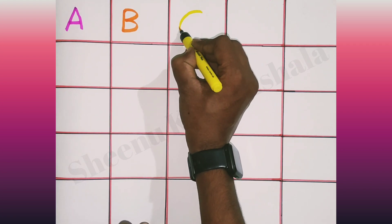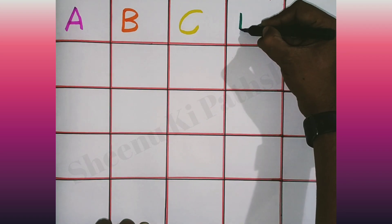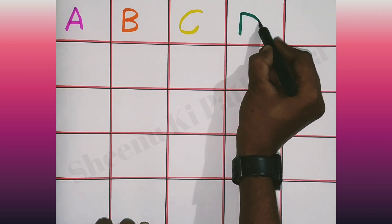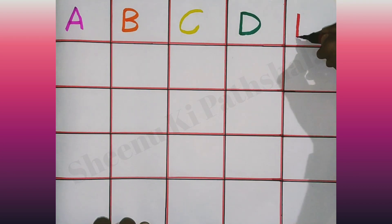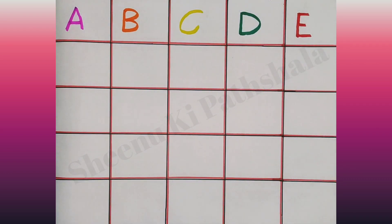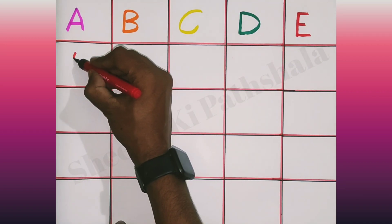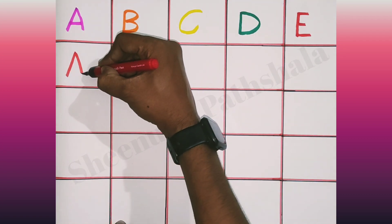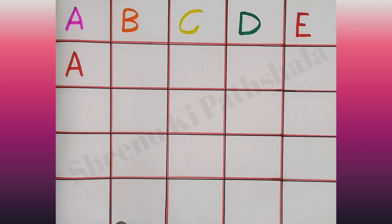C. C for cat. E. E for egg. E for egg. A. A for apple. A for apple.